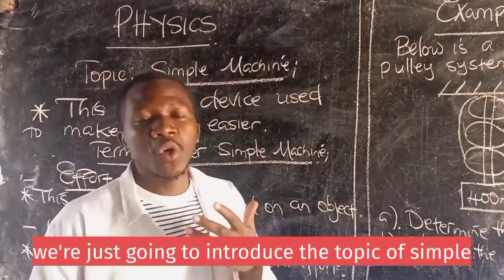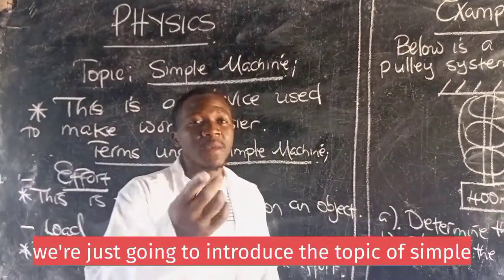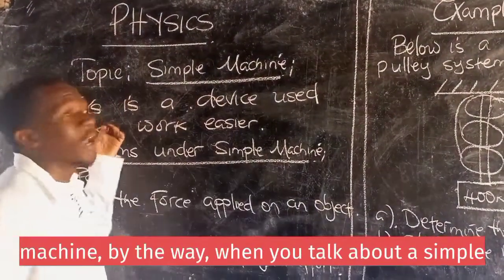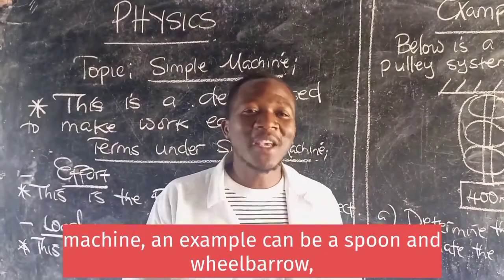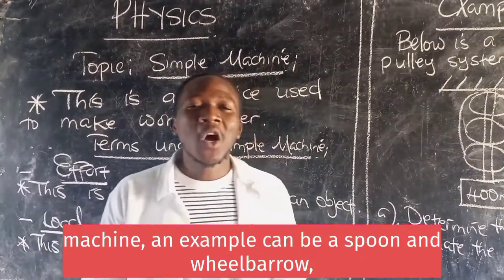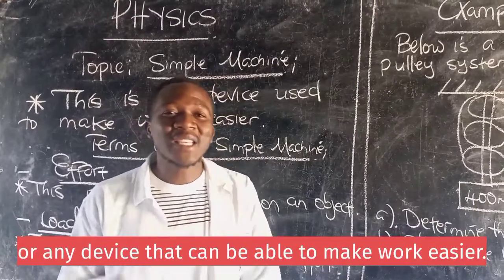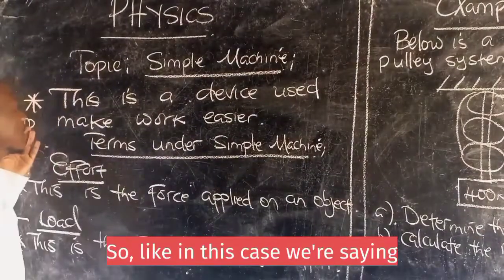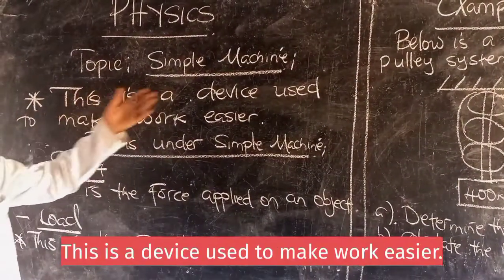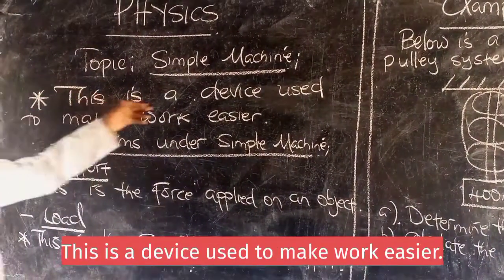We're just going to introduce the topic of simple machines. By the way, when we talk about a simple machine, an example can be a spoon, a wheelbarrow, or any device that can be able to make work easier. So in this case, we're saying this is a device used to make work easier.